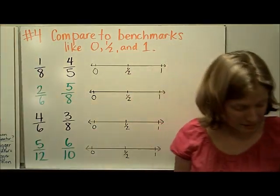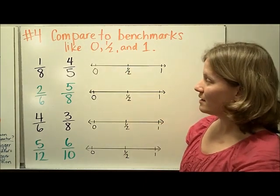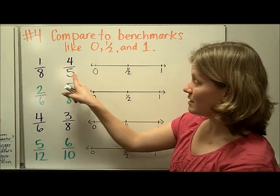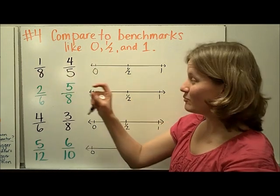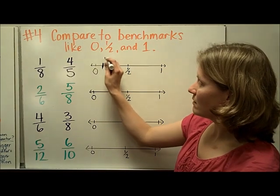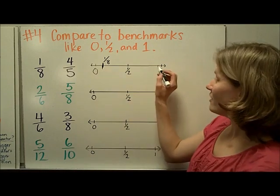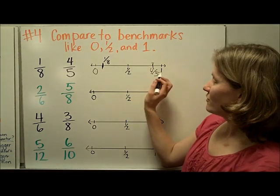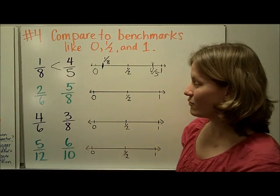Another strategy is to compare your fractions to benchmarks such as zero, one-half, and one. In this number line model, we think about where one-eighth and four-fifths would be. One-eighth is only a small amount bigger than zero, so it comes near zero. Four-fifths is only one-fifth away from one — it's almost one since five-fifths would be one. So four-fifths is way up near one, meaning four-fifths is greater than one-eighth, or one-eighth is less than four-fifths.